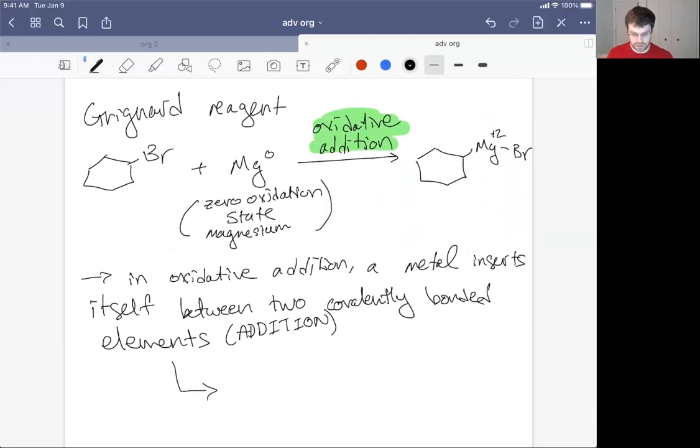Now it's called oxidative addition because the metal goes from something to something plus two. I'm showing zero to plus two. We could go from plus two to plus four, plus one to plus three, minus one to positive one. A lot of different options, negative two to zero, although those are a little bit more scarce.